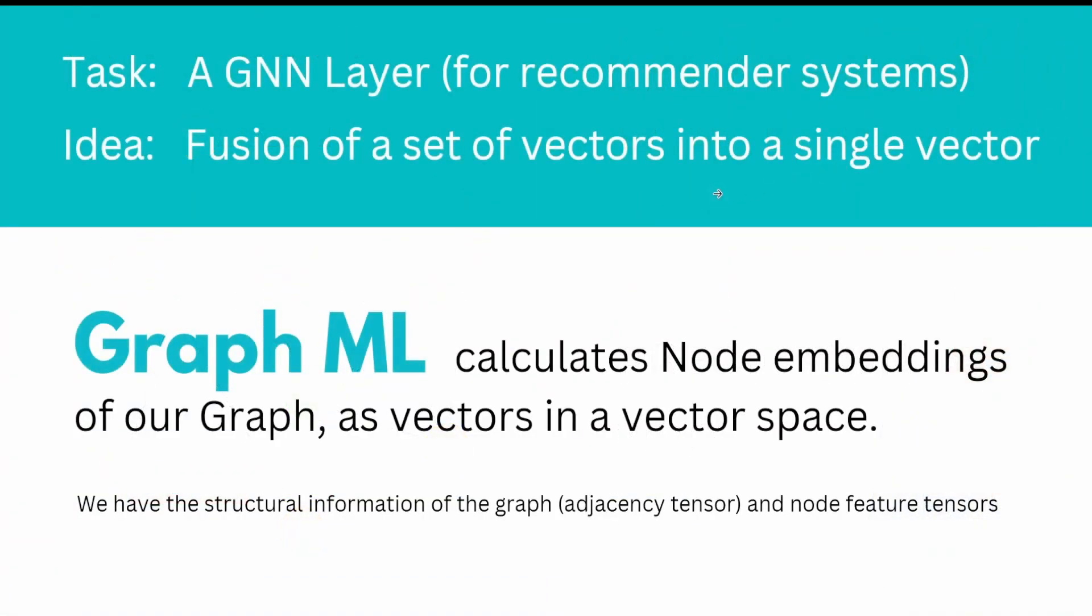Graph machine learning calculates node embeddings for each node in your graph as high-dimensional vectors or tensors in a vector space and topological space. You can encode a lot of information in tensors. We have structural information of the graph in the adjacency tensor, and for each node and edge we have feature tensors.